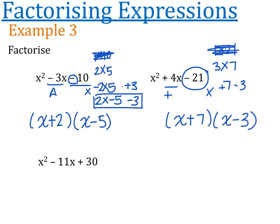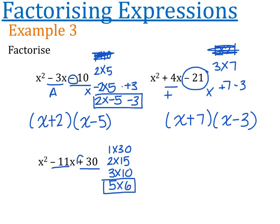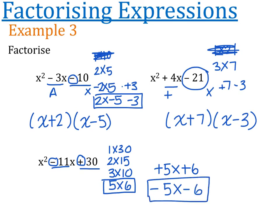The last one: x squared minus 11x plus 30. What multiplies to positive 30 and adds up to negative 11? We've got 1 times 30, 2 and 15, 3 and 10, and 5 and 6. I think it's going to have to do with 5 and 6. Since they multiply to a positive number but add to a negative, they must both be negative. So we're looking for (x - 5)(x - 6).